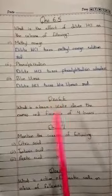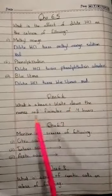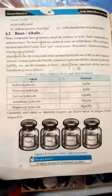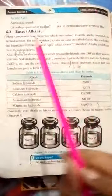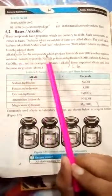Question number 6.6: What is a base? Write down the names and formula of four bases. For this answer, open page number 84 of your book. The first definition you will mark from here: bases are the compounds which produce hydroxide ions in their aqueous solutions.